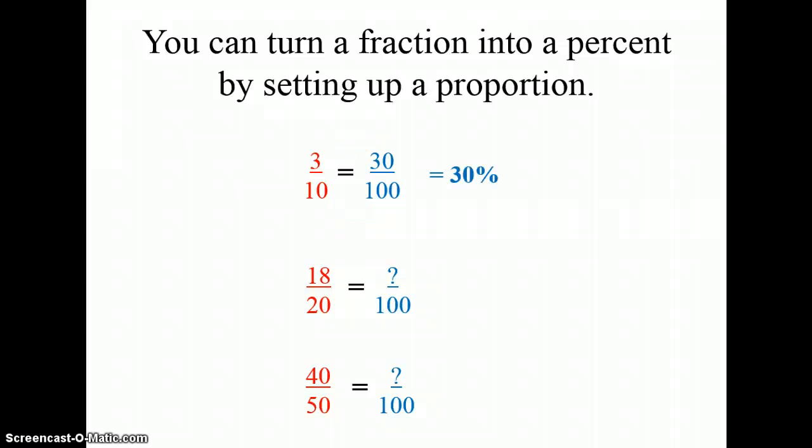Eighteen-twentieths can be turned into a percent when I figure out what I need to multiply 20 by to get to 100. I need to multiply 20 by 5, which means I also need to multiply 18 by 5 to get 90 out of 100, or 90 percent. See, once that denominator is 100, whatever the numerator is, that's my percent.